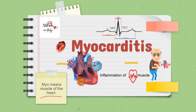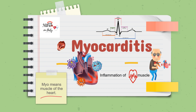Myo means the muscles of the heart. Carditis is coming from the word cardio, which means heart. And itis, which is the suffix, means inflammation. So it's a simple inflammation of the muscles of the heart. I'm your nurse Judy, and we're going to discuss myocarditis.